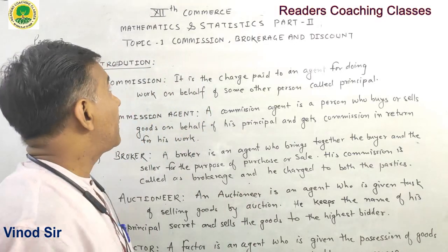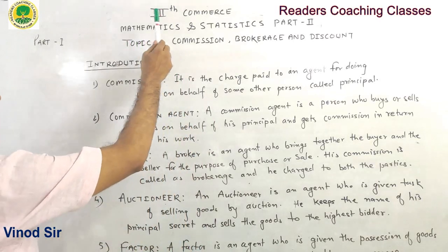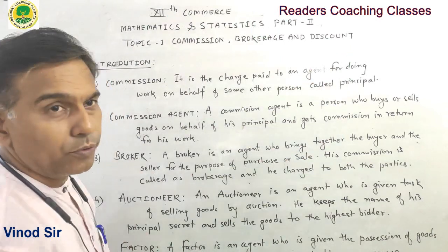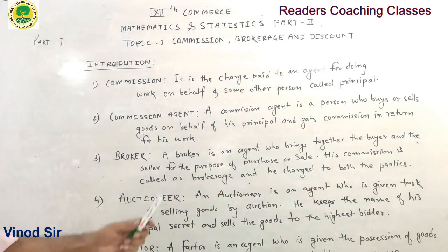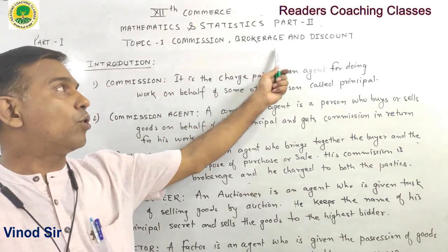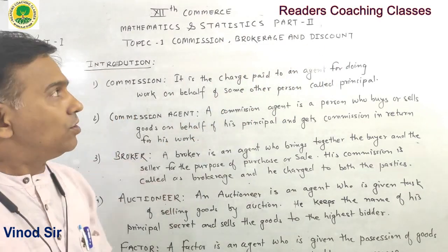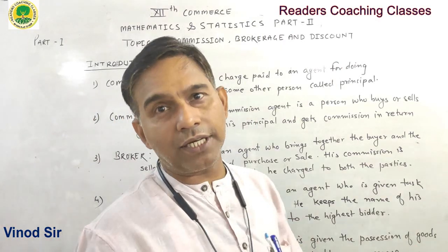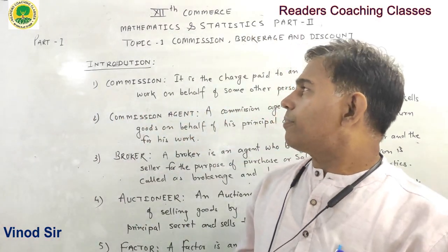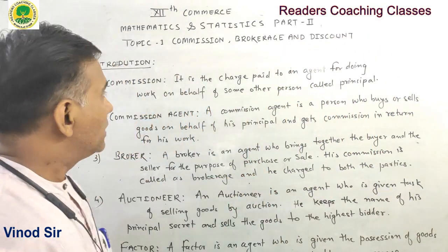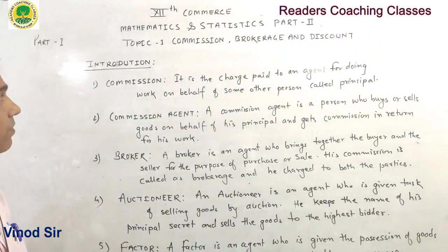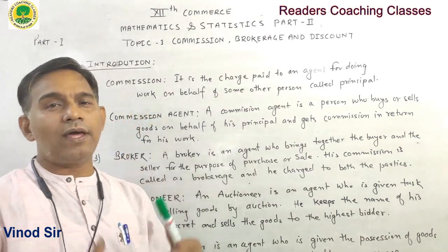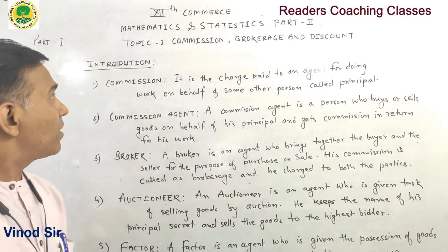Today we are going to start 12th Commerce Mathematics and Statistics Part 2, and our topic is Commission, Brokerage, and Discount. This is the commercial mathematics part. Today we are going to learn some terms in the introduction part, some formulas, and then we will discuss the problems.